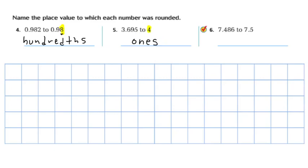And then the last one, 7.486 was rounded to 7.5. And looking at what it was rounded to and figuring out what's the last place value on that, 7.5, last place value is the tenths place.